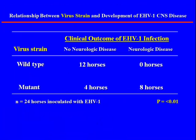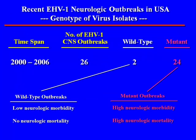The relationship between neurologic disease and the two strains: in this experiment, there were 24 horses inoculated by Dr. Allen, and with the wild strain he did not get any horses with neurological disease, but with the mutant strain, two-thirds of them did show neurologic signs. Just showing the number of outbreaks attributed to one or the other — it's 24 to 2 with the mutant strain winning. But the point is that wild strain can cause neurologic signs also, and we can't just assume necessarily that it is the mutant strain.